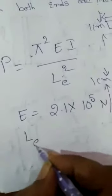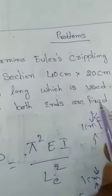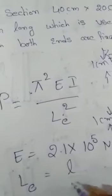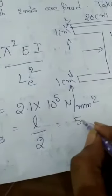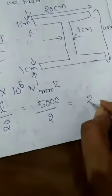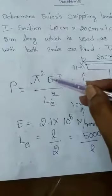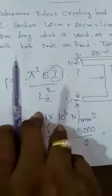E = 2.1 × 10⁵ N/mm². For effective length: both ends are fixed, so LE = L/2. The column length is 5 meters = 5000 mm, so LE = 5000/2 = 2500 mm. Next, calculate the moment of inertia I. We calculate both Ixx and Iyy, and whichever is less will be used in the crippling load formula.